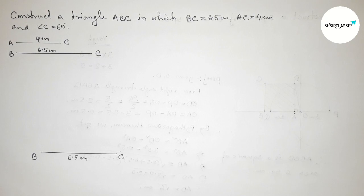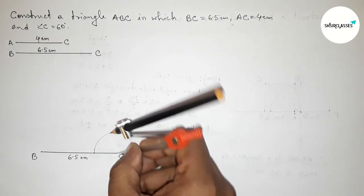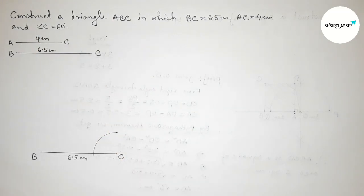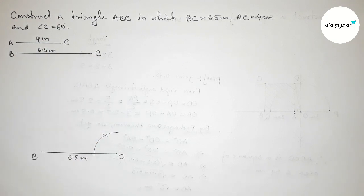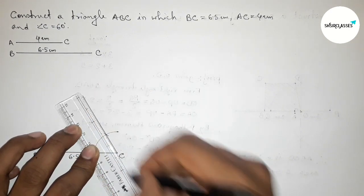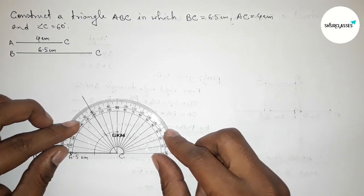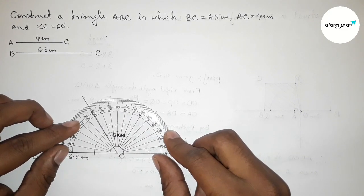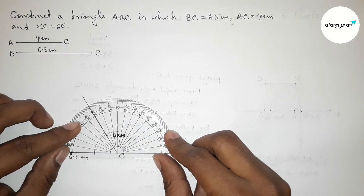Now drawing a 60 degree angle at point C. Putting the compass on point C and taking any length, drawing an arc. Then putting the compass on the arc and taking the same length, cutting another arc. Joining this line gives a 60 degree angle. Checking with the protractor — this is a 60 degree angle.